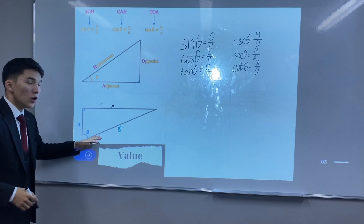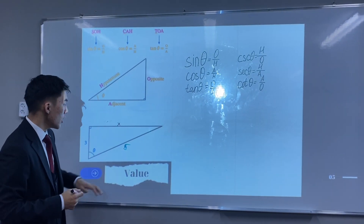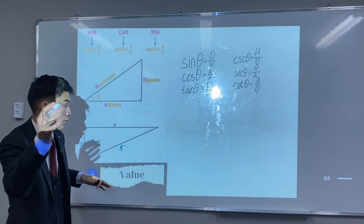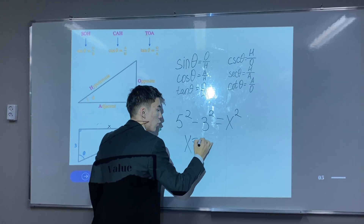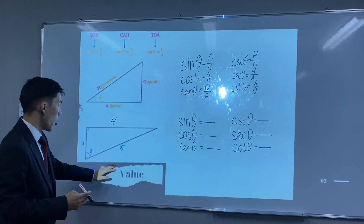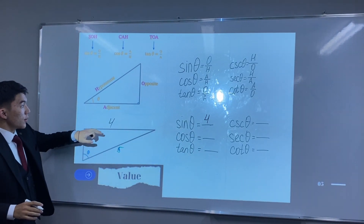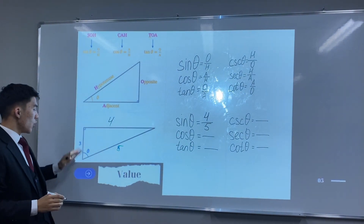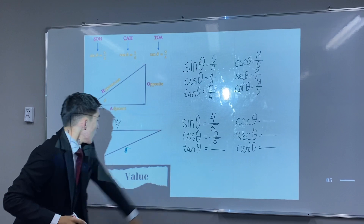Let's solve the first example. We have to find the six elementary trig functions of this angle. First, we find the missing side length using the Pythagorean theorem: 5 squared minus 3 squared equals x squared, so x equals 4. The hypotenuse is 5. Then: sine theta equals opposite over hypotenuse = 4/5, and cosine theta equals adjacent over hypotenuse = 3/5.